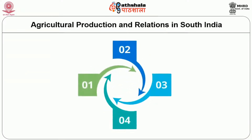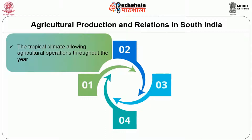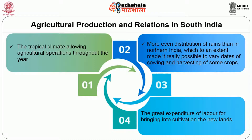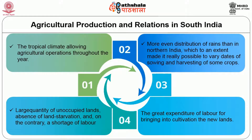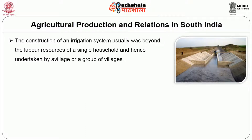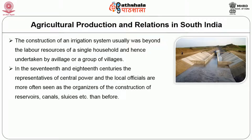Some of the most important features of agricultural production in South India were: a tropical climate allowing agricultural operations throughout the year, more even distribution of rains than in Northern India, combination of southwestern and southeastern monsoons, large quantities of unoccupied lands, absence of land starvation but rather a shortage of labour, and the great expenditure of labour required for bringing new lands into cultivation. The construction of irrigation systems was usually beyond the resources of a single household and hence undertaken by a village or group of villagers. In the 17th and 18th centuries, representatives of central power and local officials were often seen as organizers of the construction of reservoirs and canals.